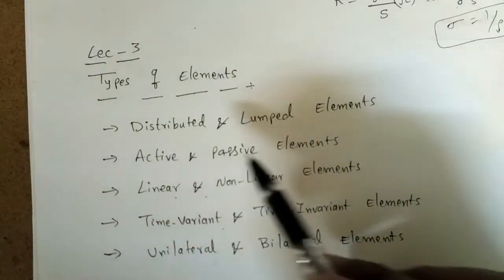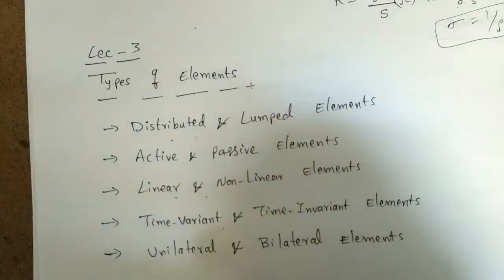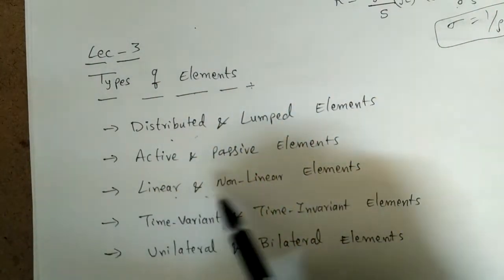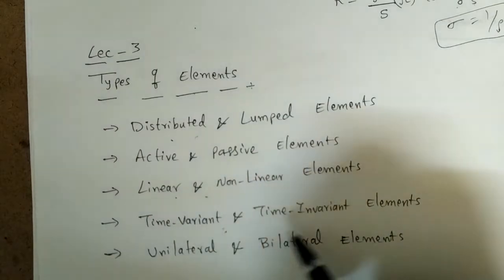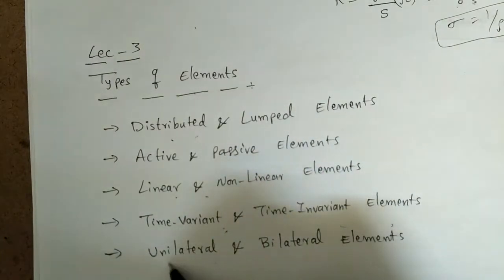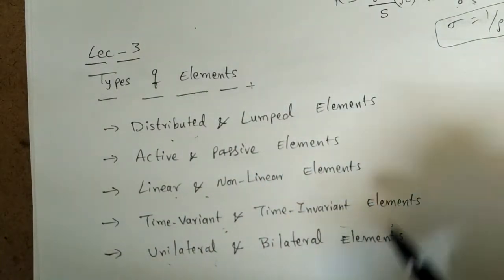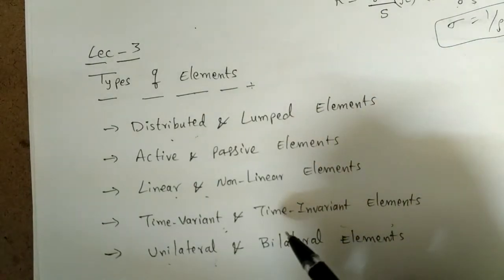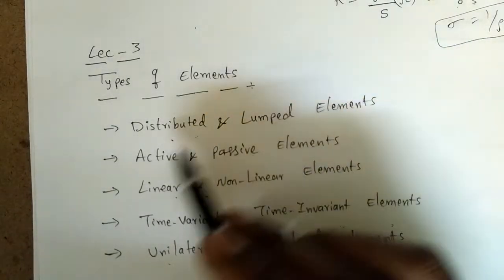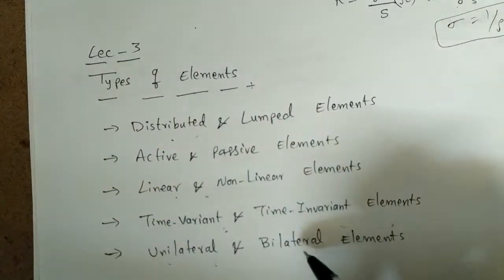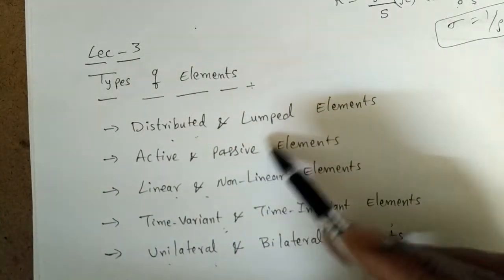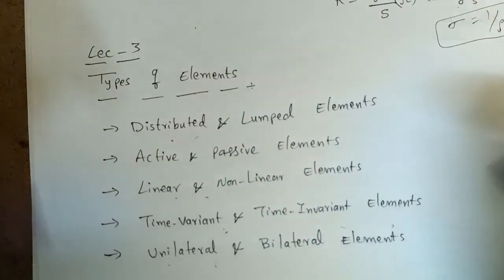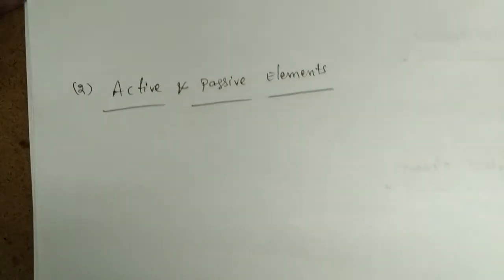Now we are going to discuss the types of elements. There are five types: distributed and lumped elements, active and passive elements, linear and non-linear elements, time variant and time invariant elements, and unilateral and bilateral elements. In network theory we need to know how these elements behave.